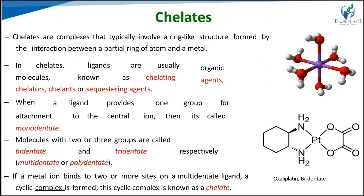When a drug forms metal chelates, the solubility and absorption of both the drug and metal ion may be affected. Drug chelation can lead to either increased or decreased absorption. Examples include EDTA and citric acid tartrates. Chelates typically involve a ring-like structure formed by interactions between a partial ring of atoms and the metal. Ligands in chelates are usually organic molecules known as chelating agents. When a metal ion binds to two or more sites on a multidentate ligand, a cyclic complex — called a chelate — is formed.